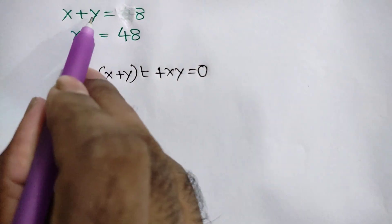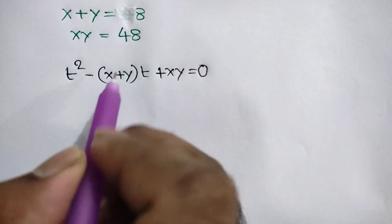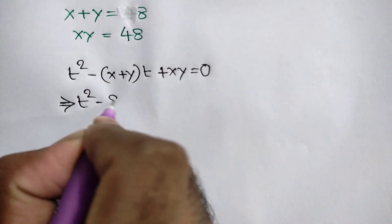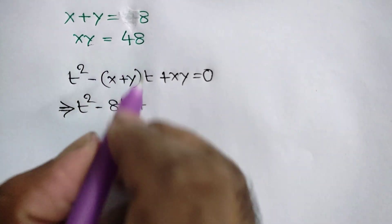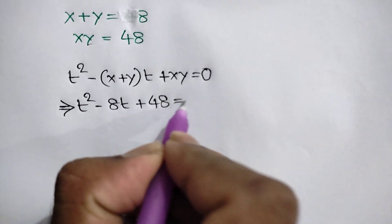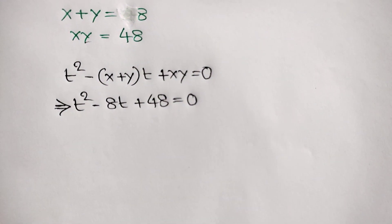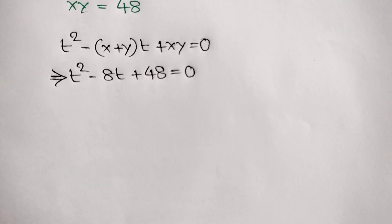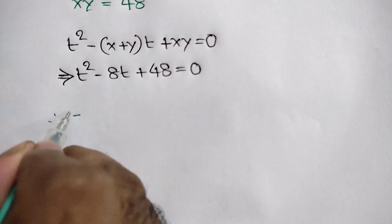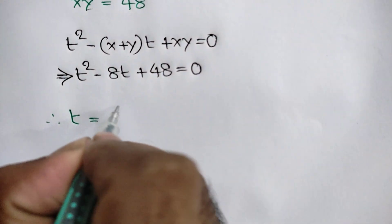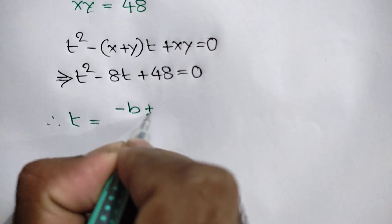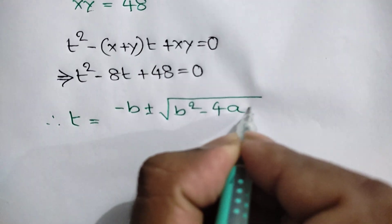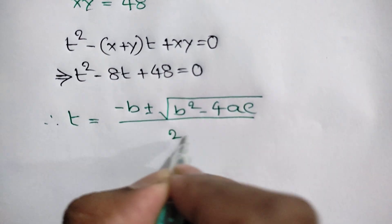Substituting the given values — x plus y is equal to 8 and xy is equal to 48 — we get: t squared minus 8t plus 48 is equal to zero. Now we solve this quadratic equation using the quadratic formula: t equals negative b plus or minus the square root of b squared minus 4ac, all over 2a.